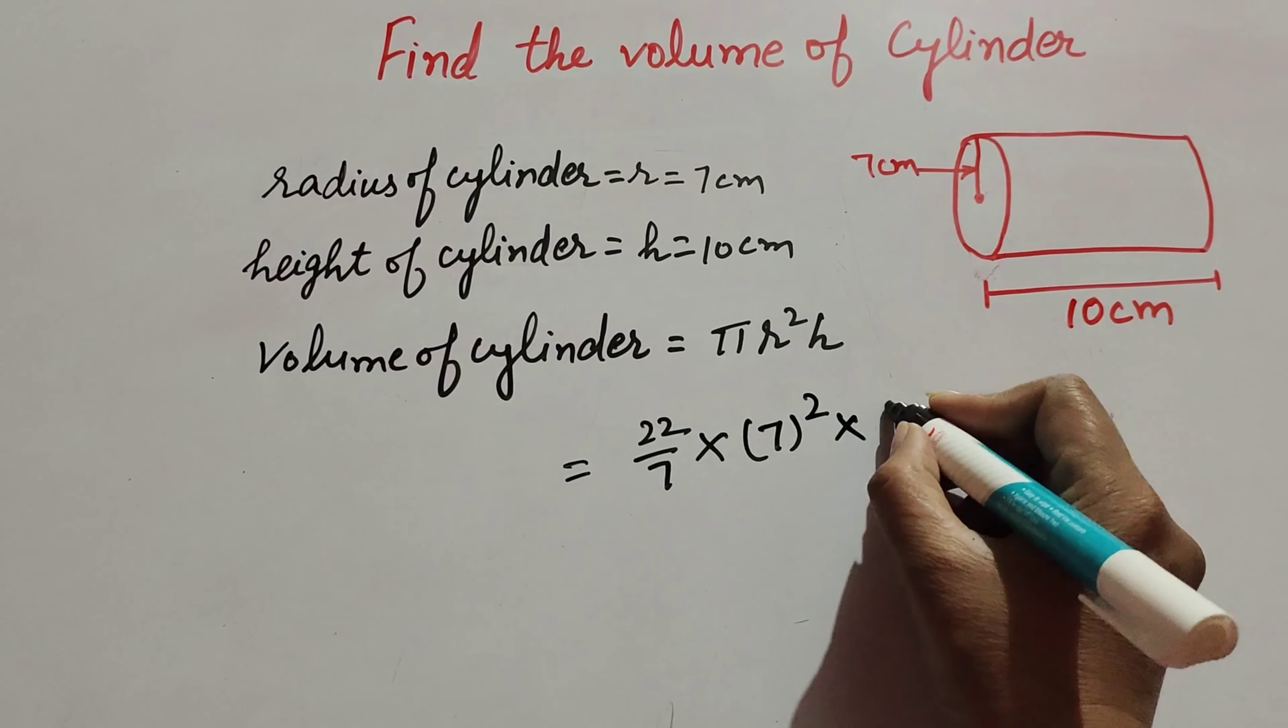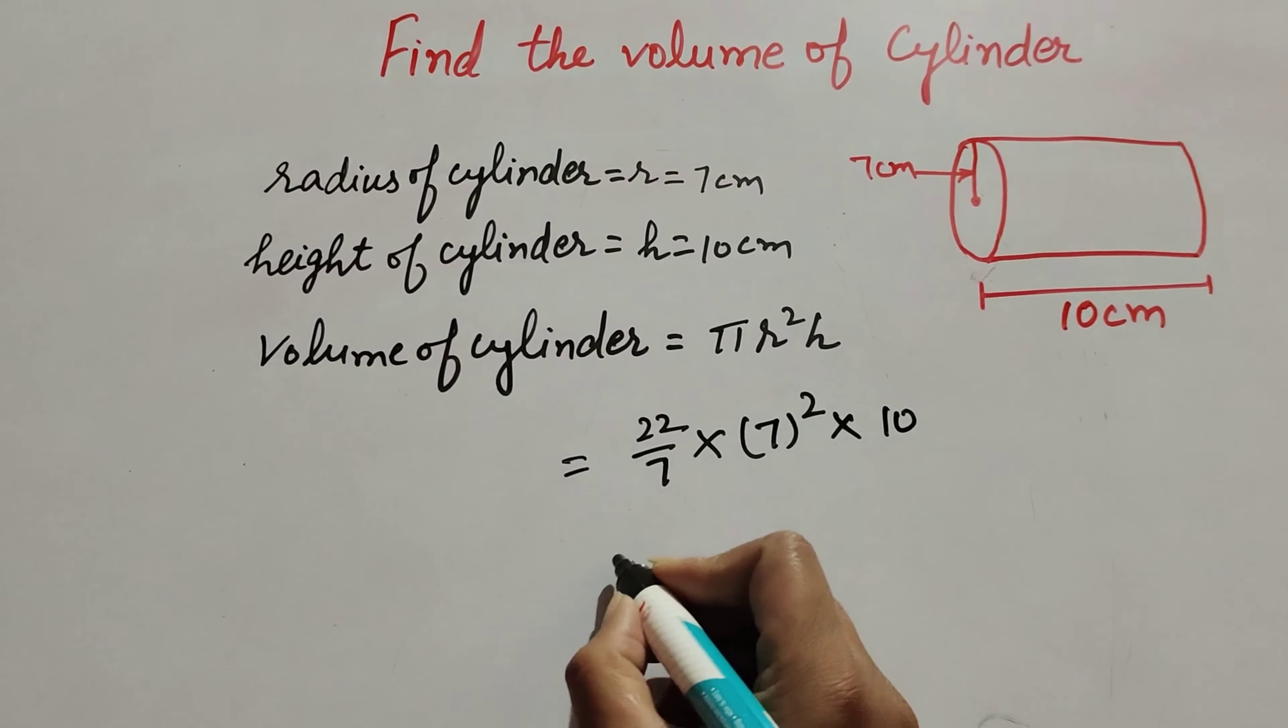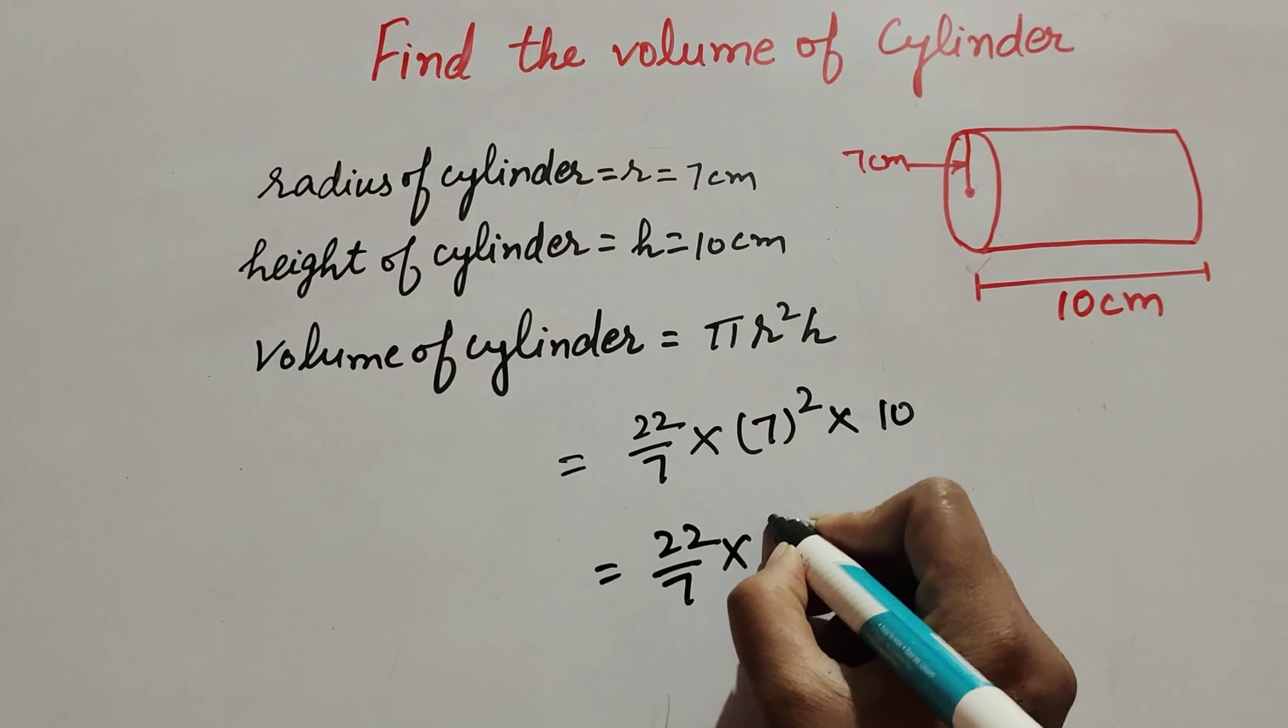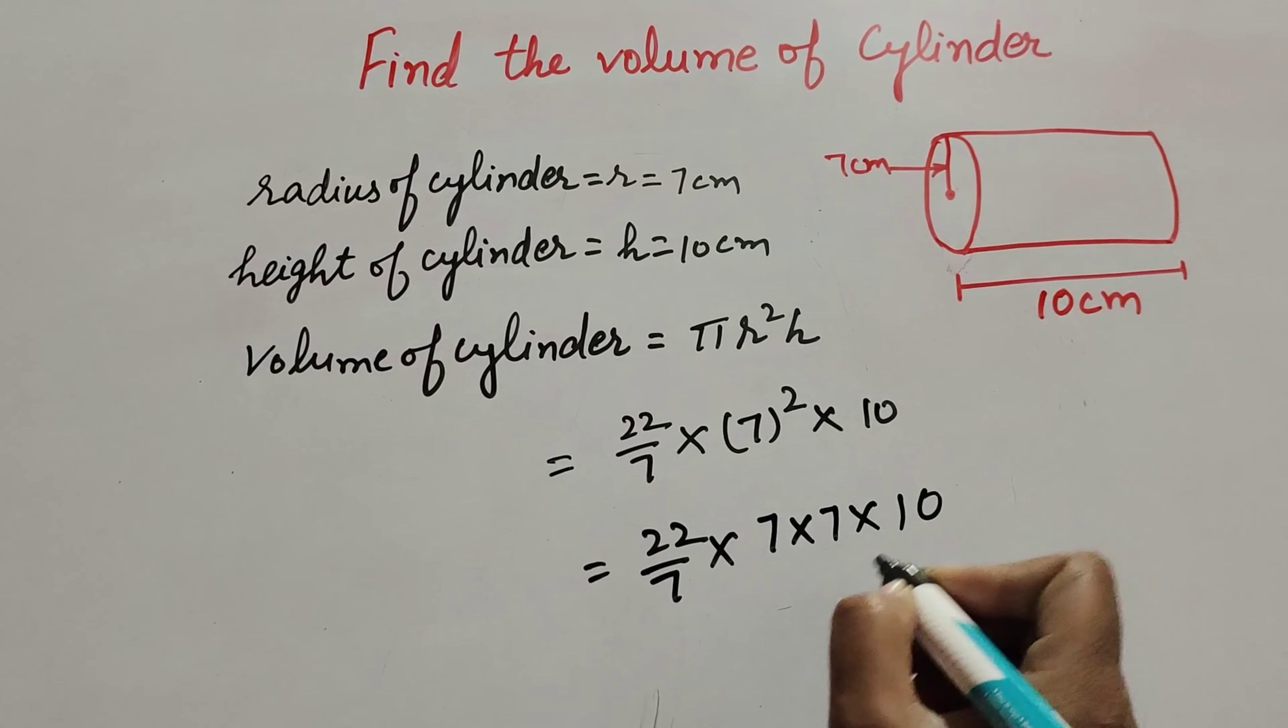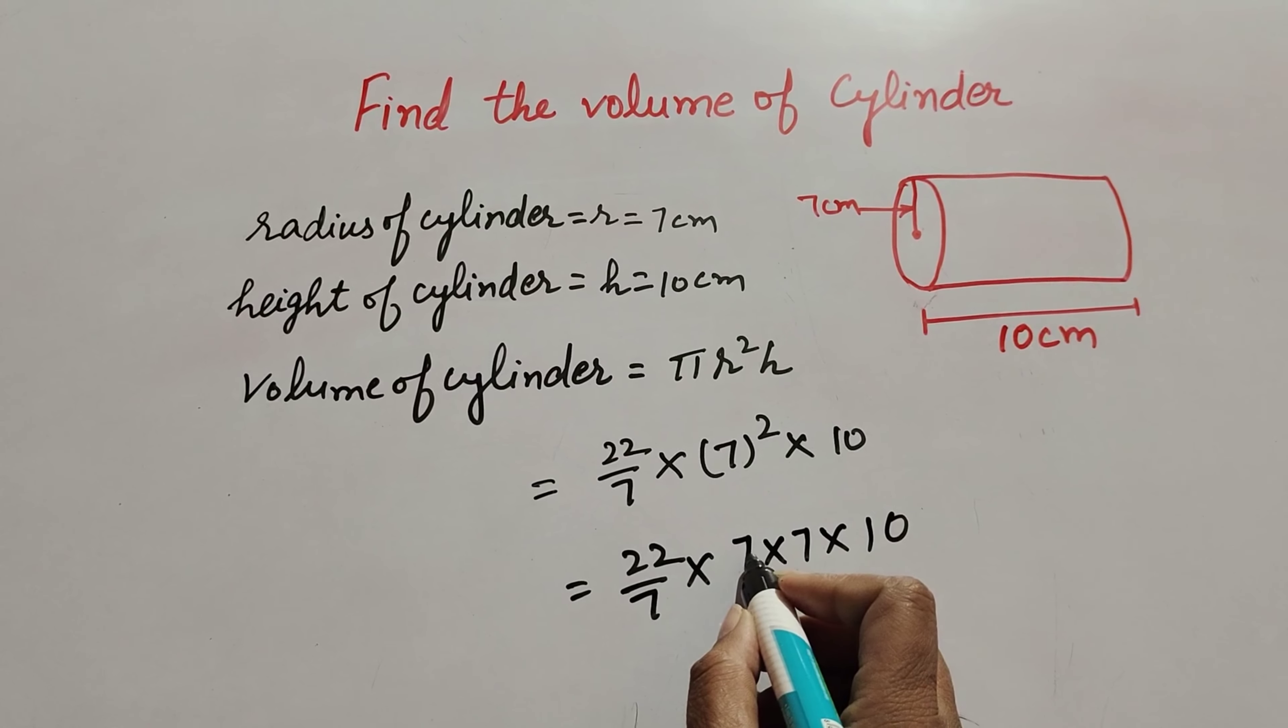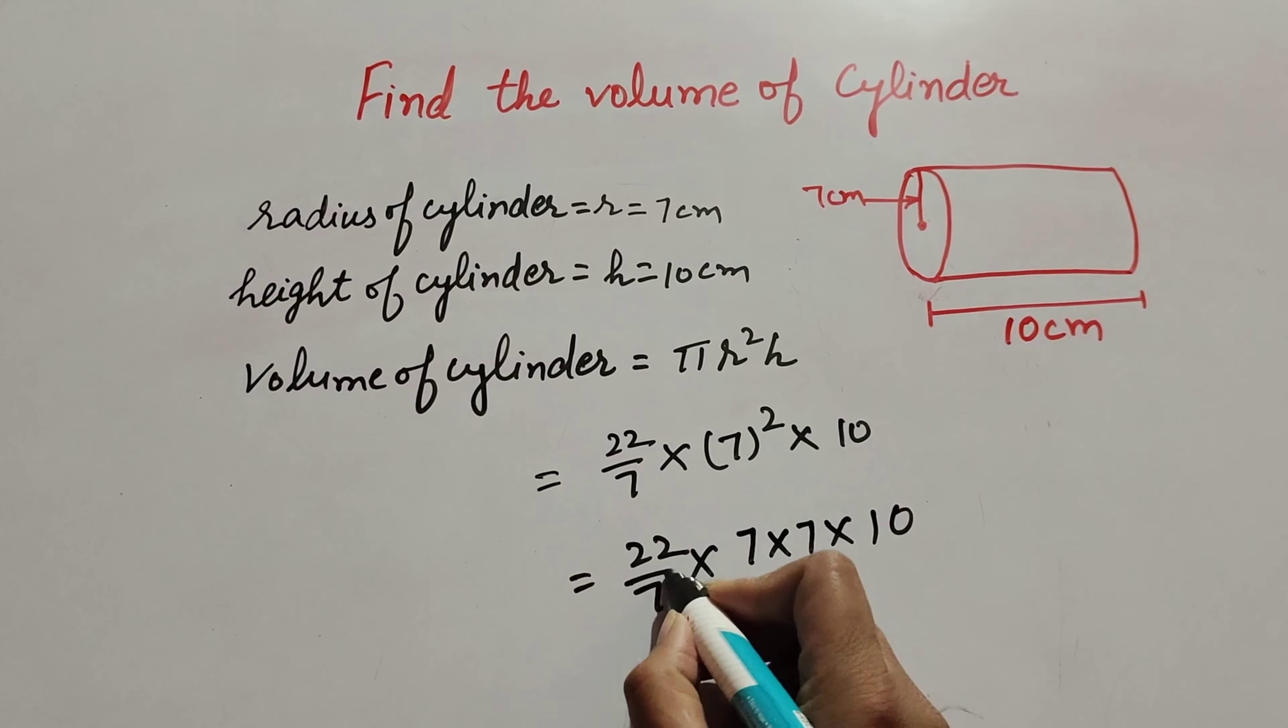22/7 × 7 × 7 × 10. So, 7 in the denominator and 7 in the numerator—both are divisible by 7, so we cancel them. 22 × 7, we get the answer 154. Multiply by 10.